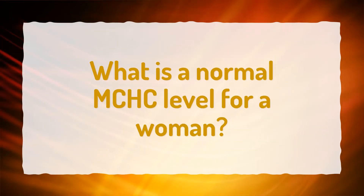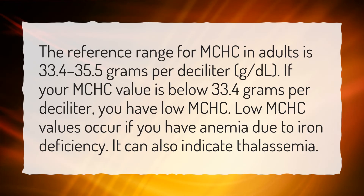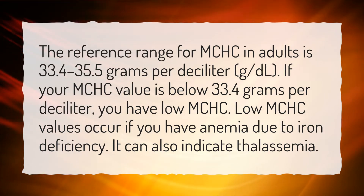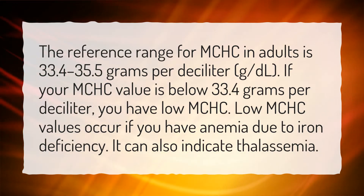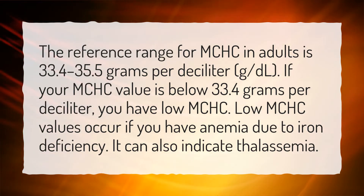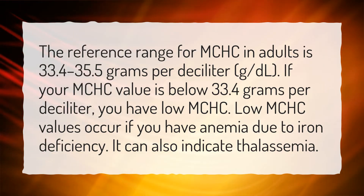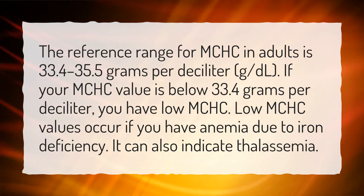What is a normal MCH level for a woman? The reference range for MCH in adults is 33.4 to 35.5 grams per deciliter. If your MCHC value is below 33.4 grams per deciliter, you have low MCHC. Low MCHC values occur if you have anemia due to iron deficiency. It can also indicate thalassemia.